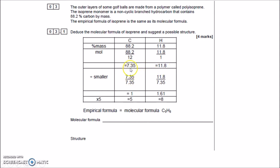Divide both values by the smaller one (7.35): carbon gives 1, hydrogen gives approximately 1.61. Multiply both by 5 to get whole numbers: 5 to 8. So the empirical formula — which is also the molecular formula here — is C₅H₈.